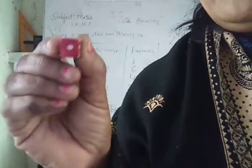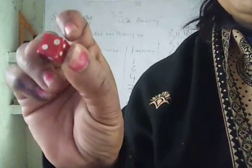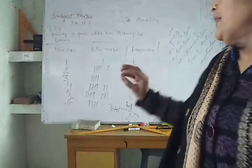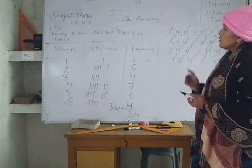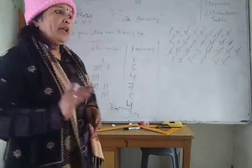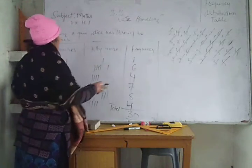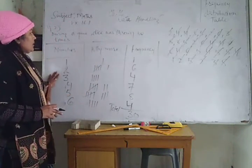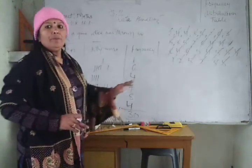Look at the numbers — this is 1, then 2 — and when it was thrown 30 times, the outcomes were this much. So we are going to prepare a frequency distribution table. You have to make 3 columns: the first for number, the second for tally marks, and the third for frequency.